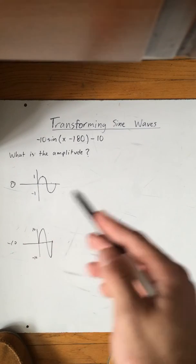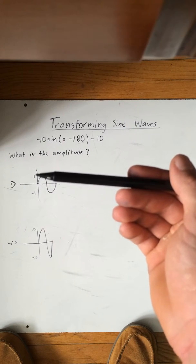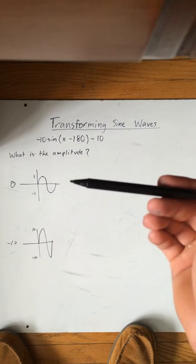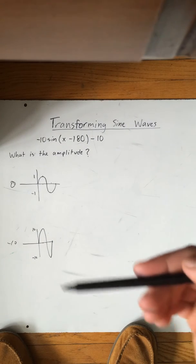But the amplitude won't change. In the original sine function, the amplitude is 1 because it goes up 1 and down 1. And here, using this value, it's going up 10 and then down 10.